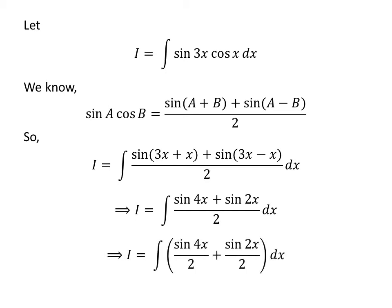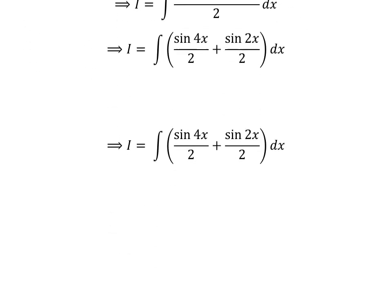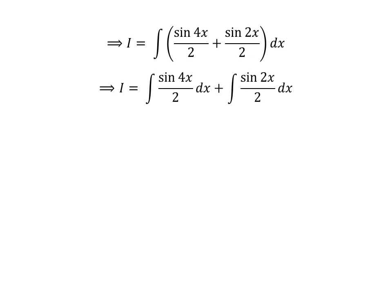The integrand can be expressed as the sum of two fractions. So i is equal to the integral of sine of 4 times x upon 2, plus sine of 2 times x upon 2, with respect to x. Applying the linearity property of the integral gives us i equal to the integral of sine of 4 times x upon 2 with respect to x, plus the integral of sine of 2 times x upon 2 with respect to x.